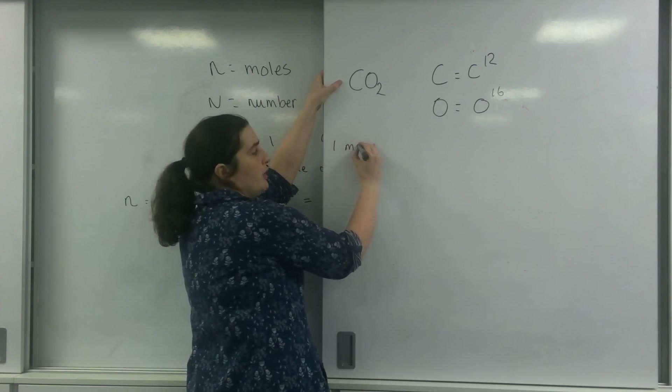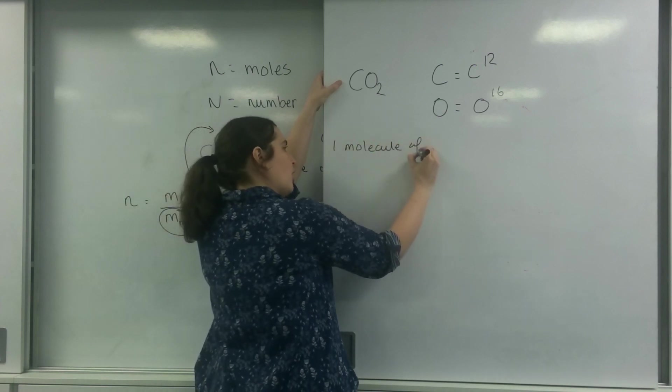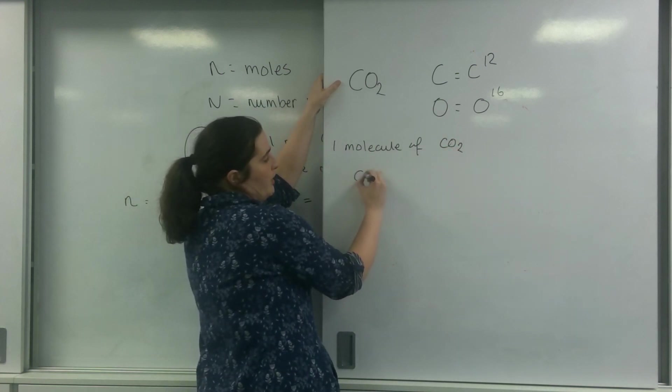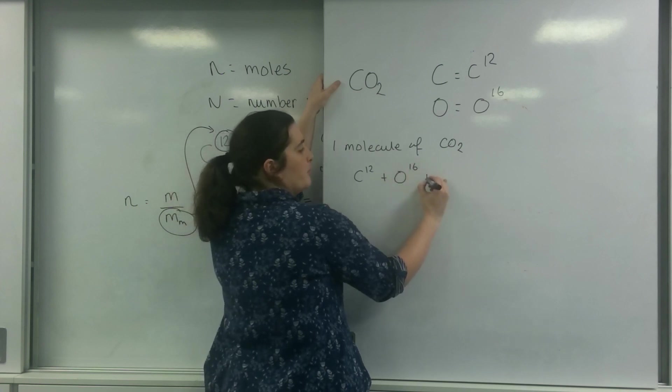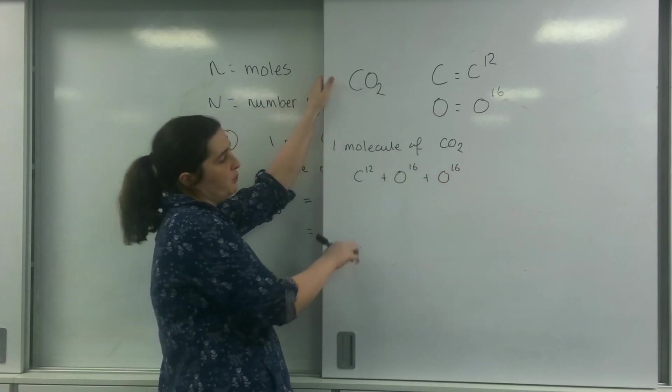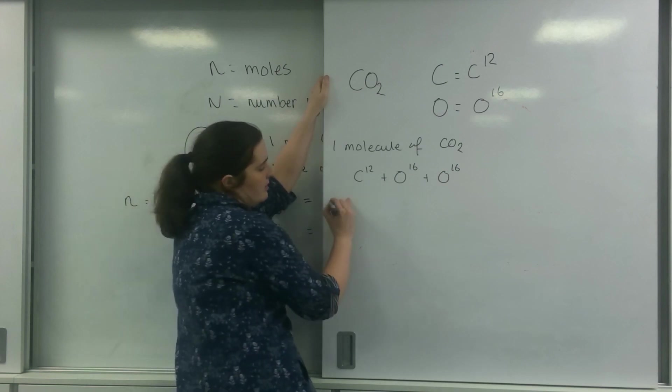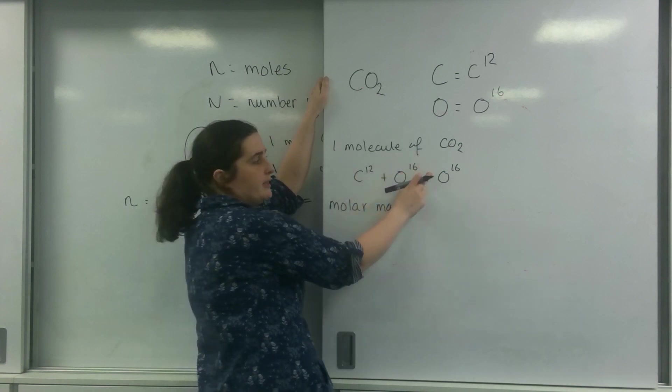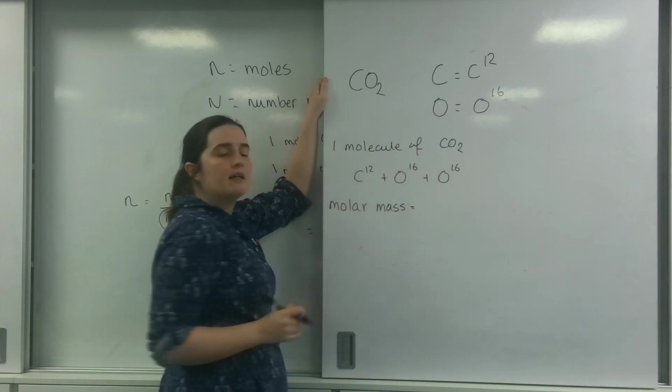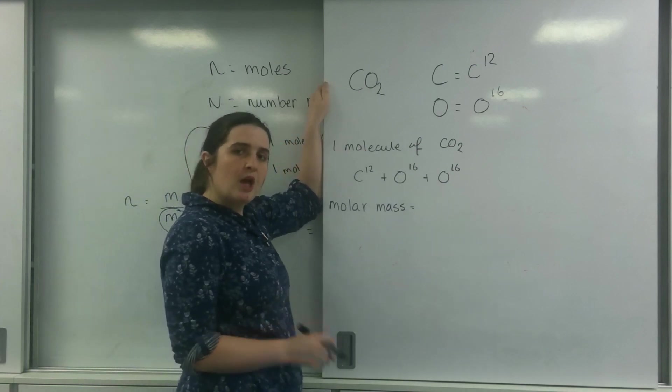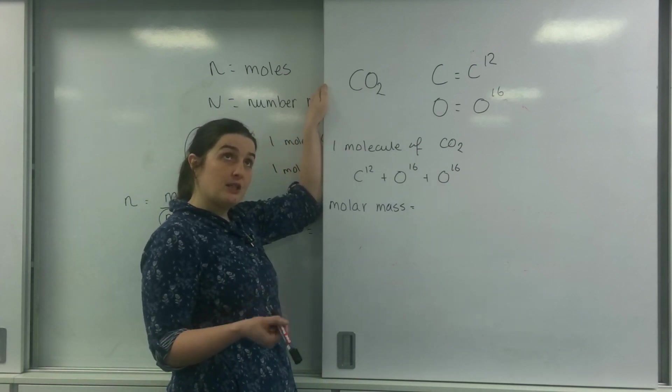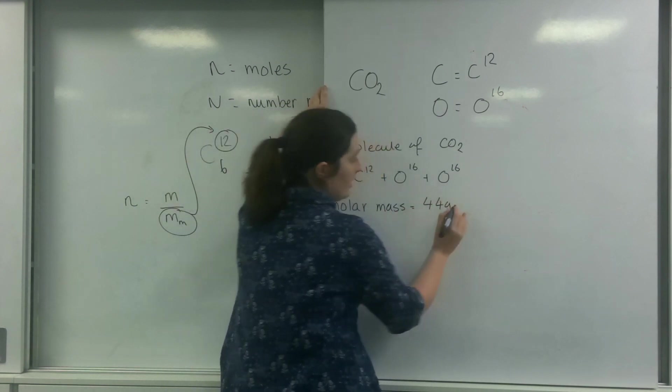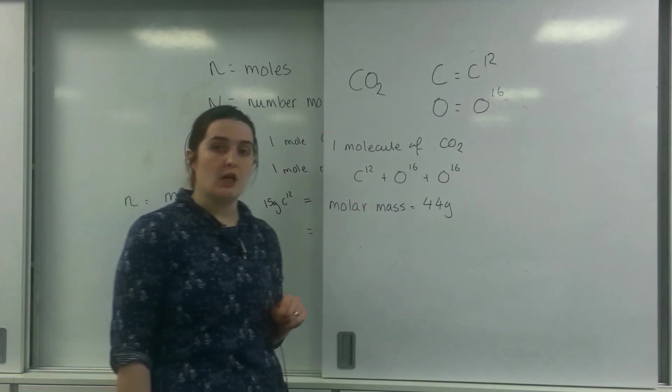So for one molecule of CO2, that's going to be one carbon plus an oxygen plus an oxygen. So in total, my molar mass is going to be 12 plus 16 plus 16. So 16 plus 16 is 32, plus 12, 44. So that's how many grams one mole of CO2 is.